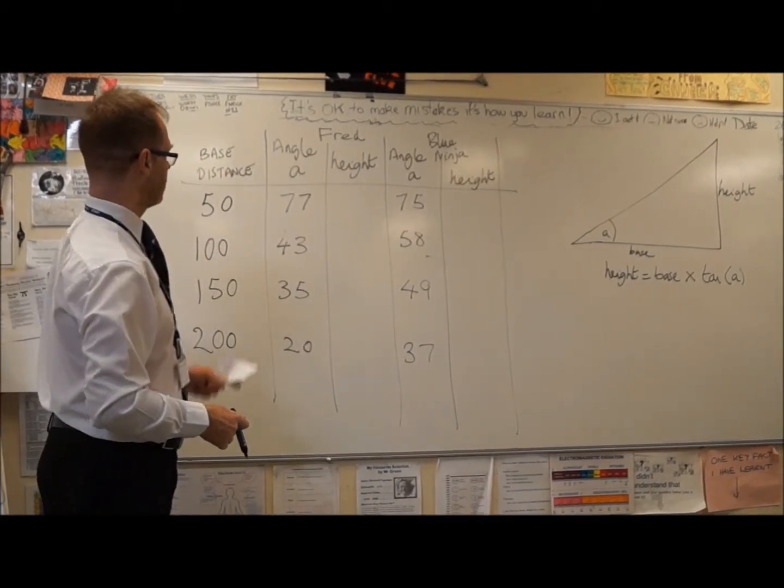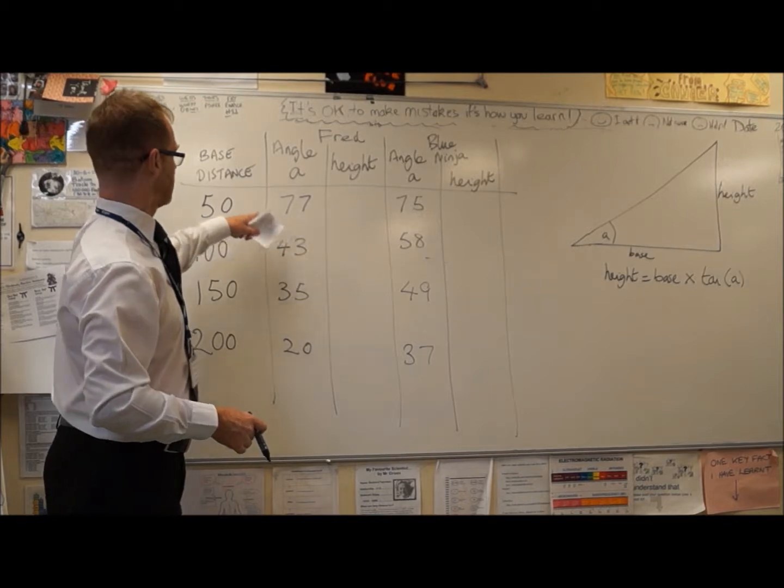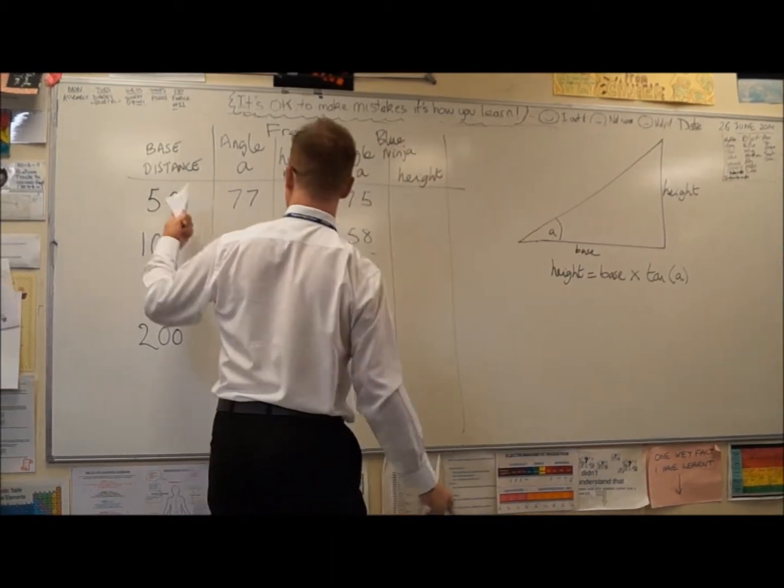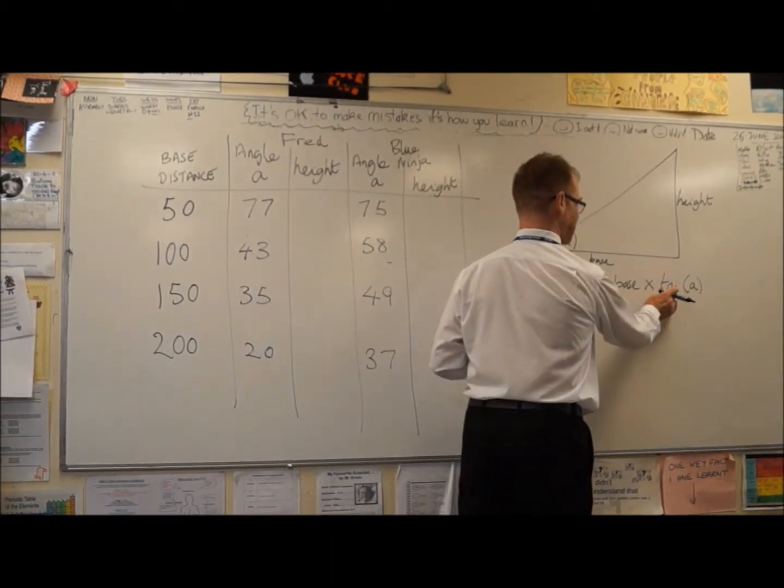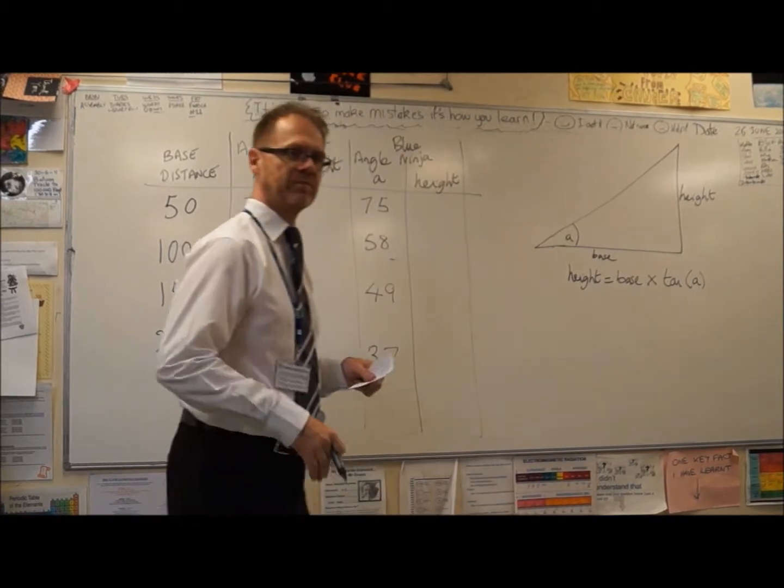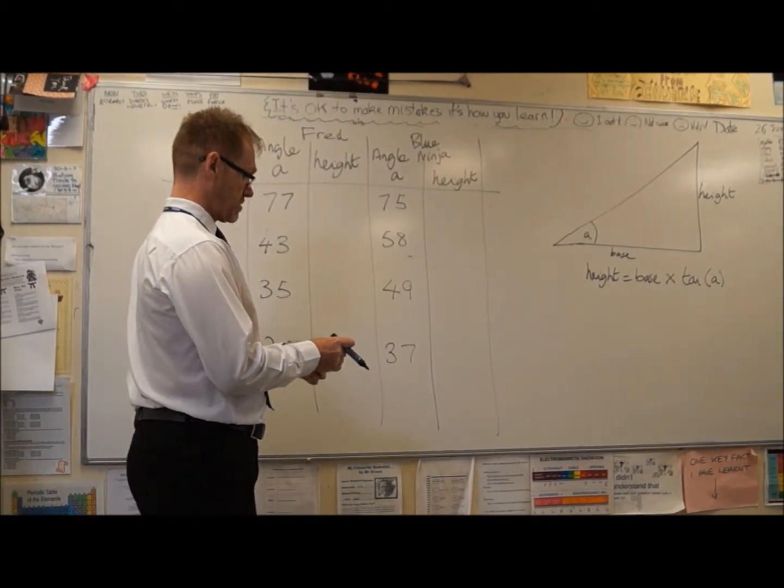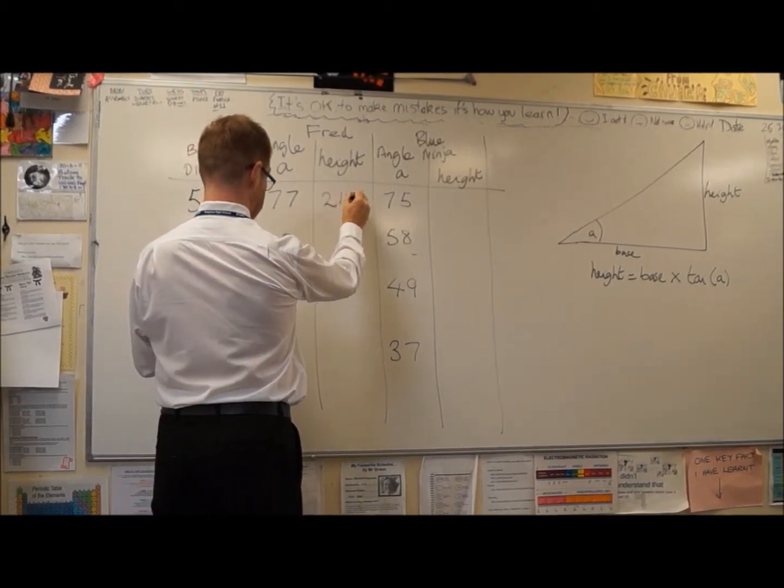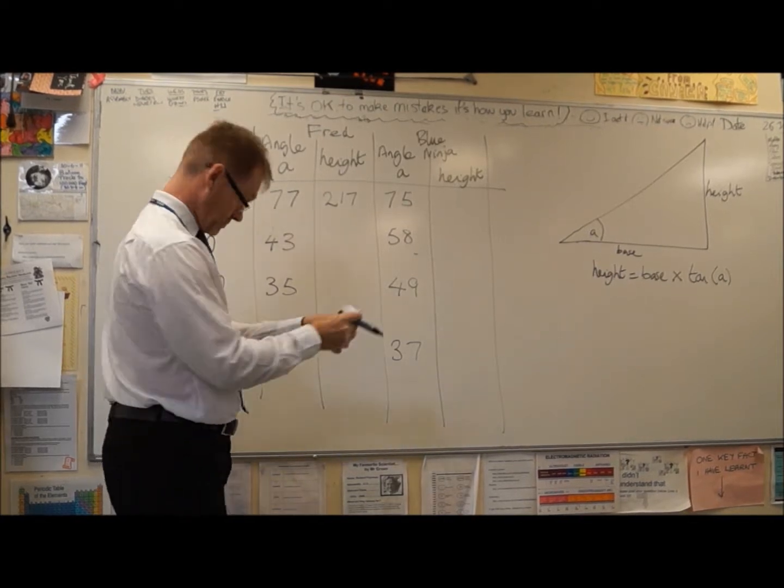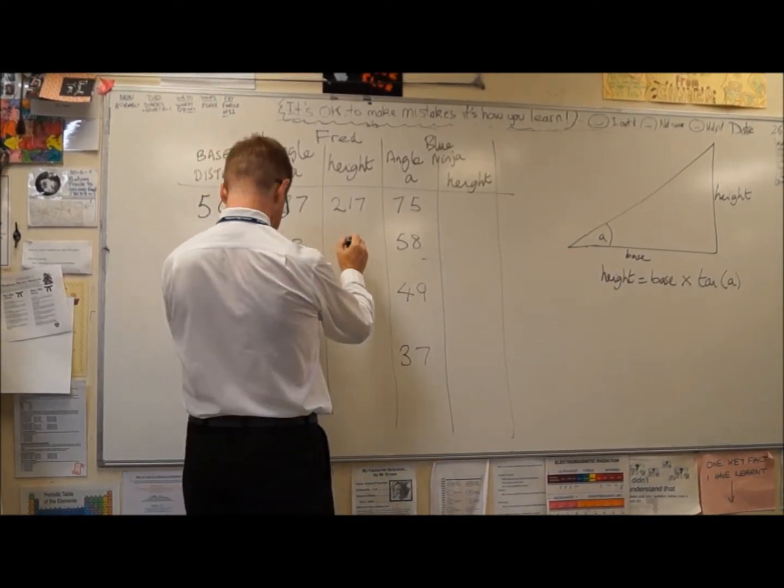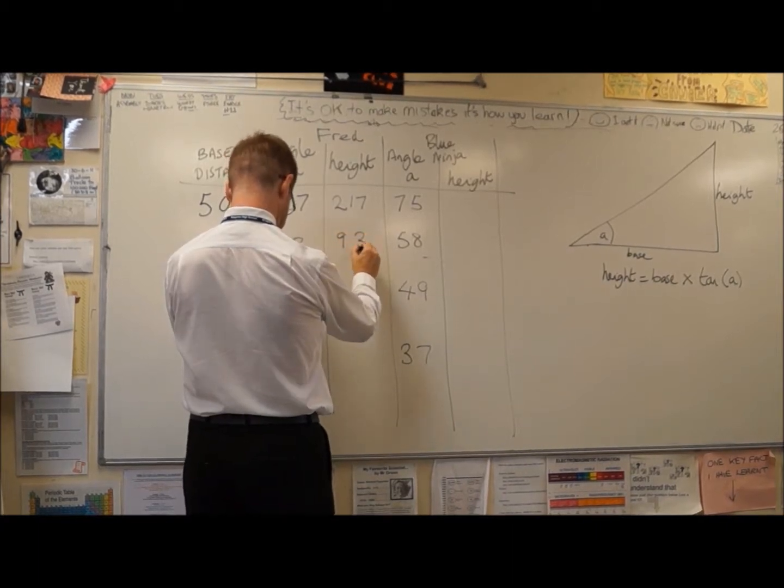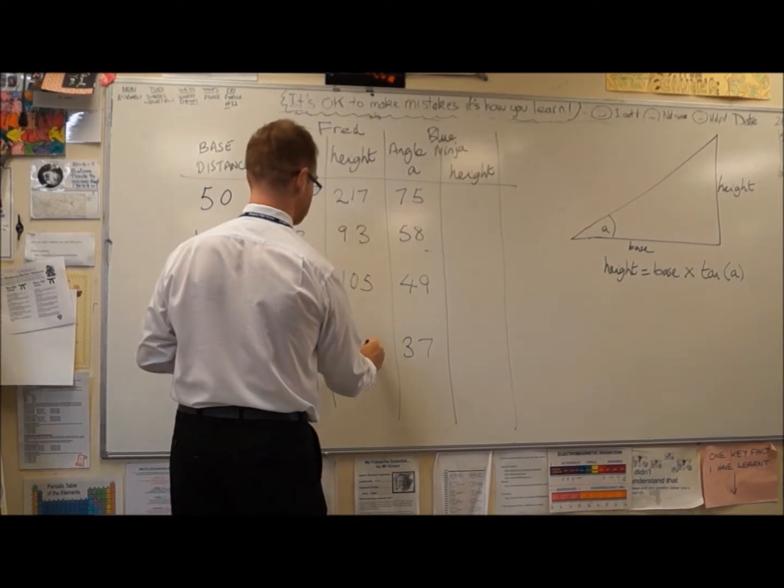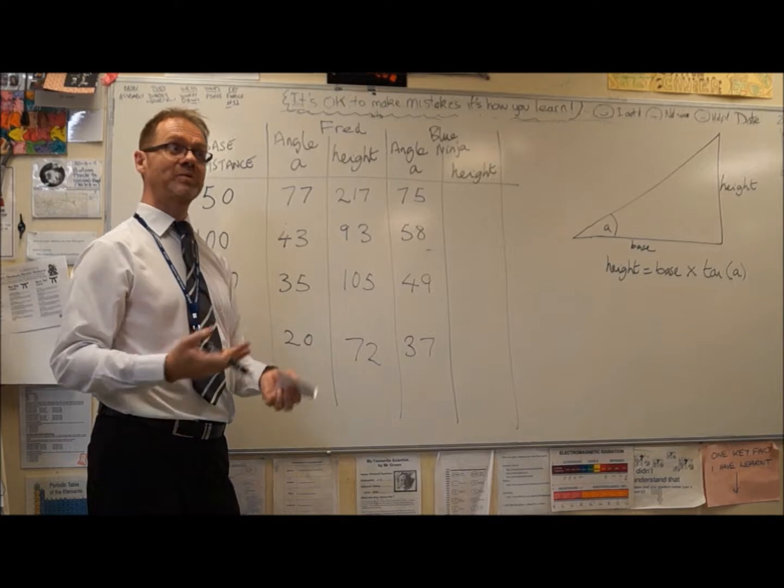So what we need to do now is to plug these numbers in. So we need to multiply the base. So there's an equation here, height equals the base, which for the first one would be 50 metres, times the tan of the angle. I've already done the work on this, so we can just write the results up. So we start off by saying an estimate for Fred might be 217 metres, or it could be 93, or 105, or 72. So we've got some quite different results now. And I'll discuss that in a moment.